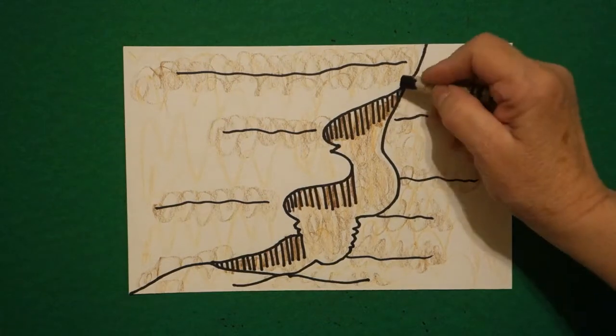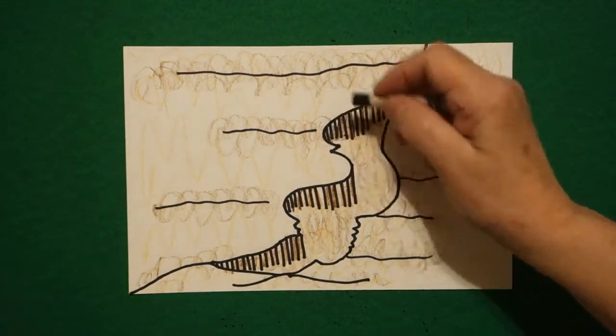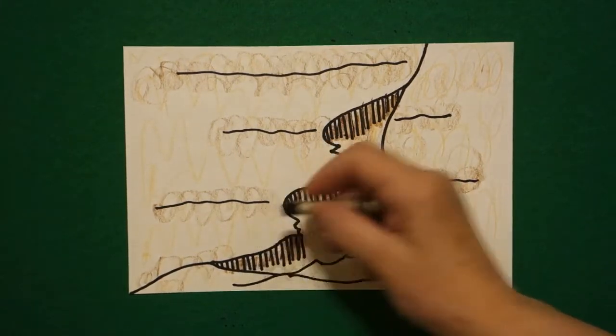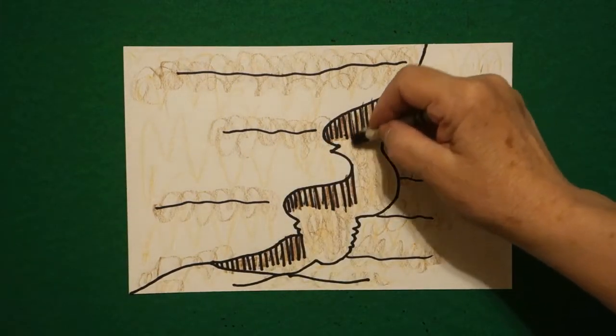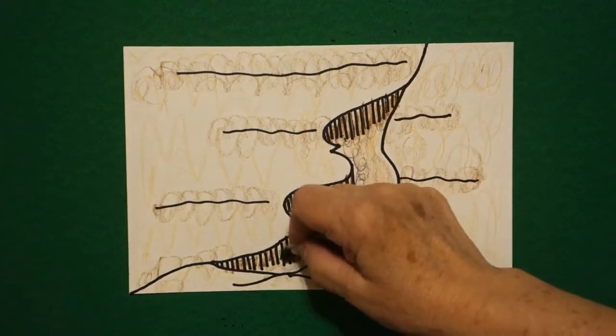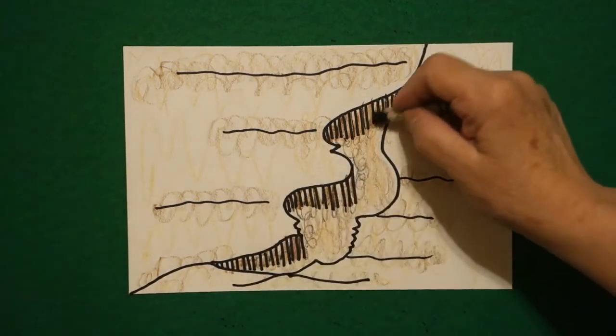Last thing, take your black and just add a little bit more color to your straight lines, and if you want, you can add a little bit of black going around the whole Rift Valley section.